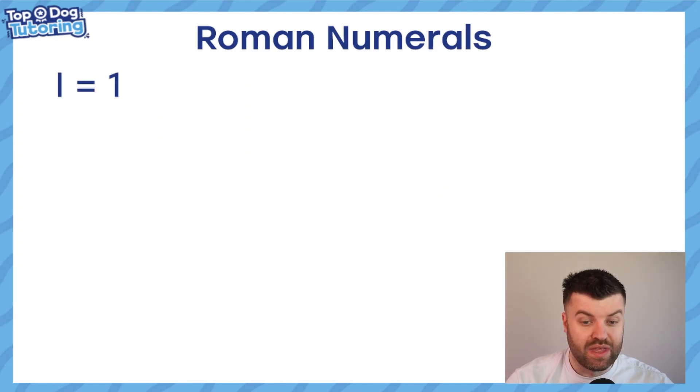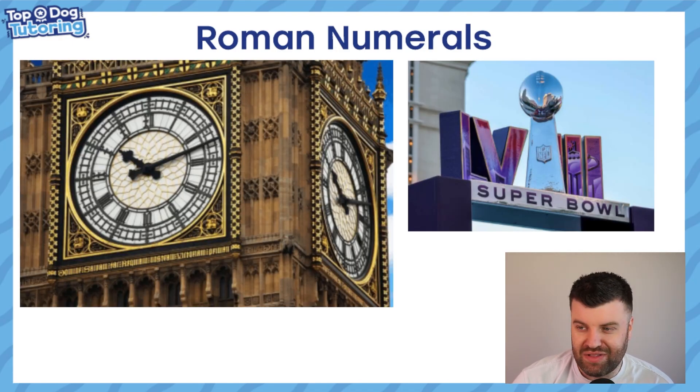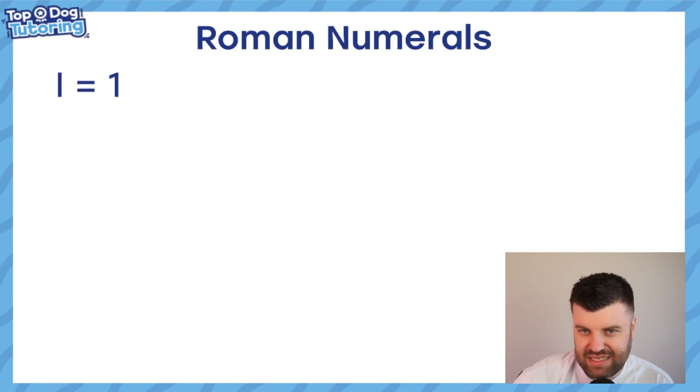So for example here, LVIII, well that's going to be 58 and we'll see why in a second. But let's not get ahead of ourselves, let's just have a very quick recap. I equals 1, the most basic Roman numeral that exists, just like I showed you here on the face of Big Ben.